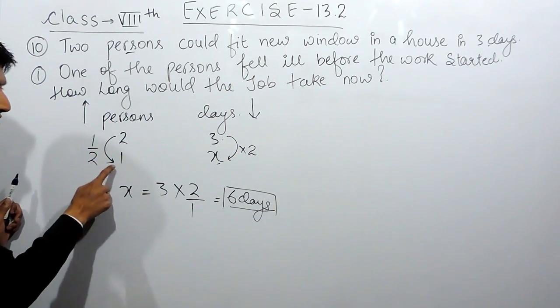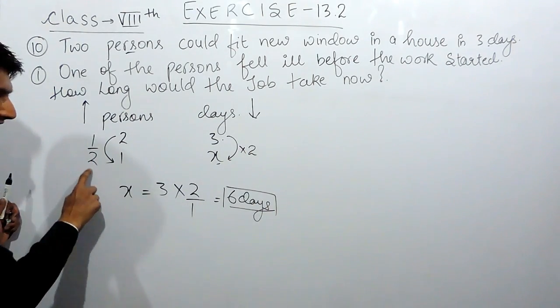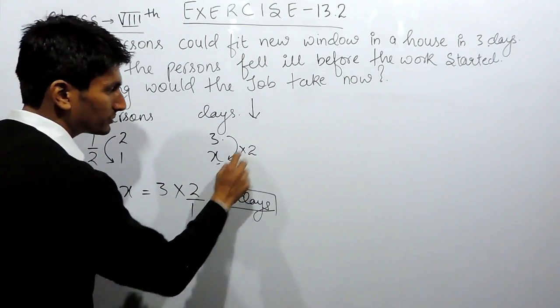Or this can be vice versa. When the number of persons get halved, the number of days must be twice.